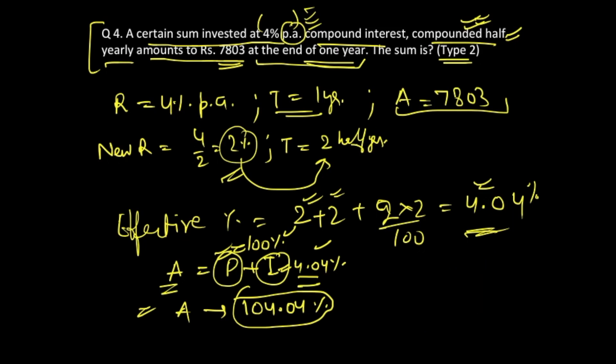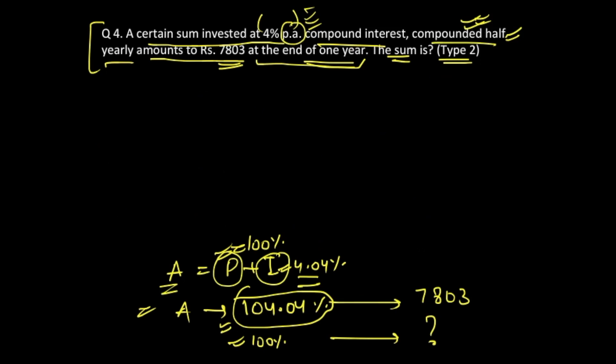Based on the given information, we know that this amount value is already 7803, so this 104.04% is pertaining to rupees 7803. We have to find out what is the sum invested. So we have to find the 100% value. If the value at 104.04% is 7803, what you're going to do is make a cross multiplication, and you're going to get your answer as 7803 into 100 over 104.04.